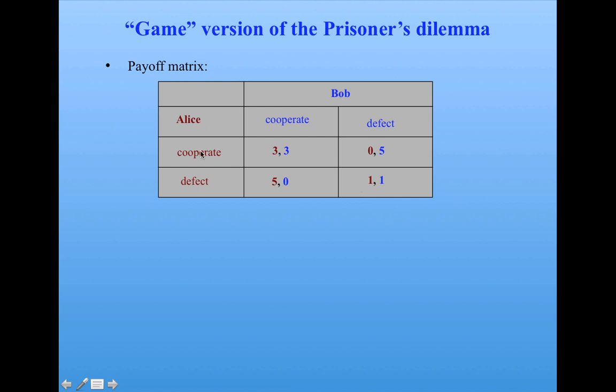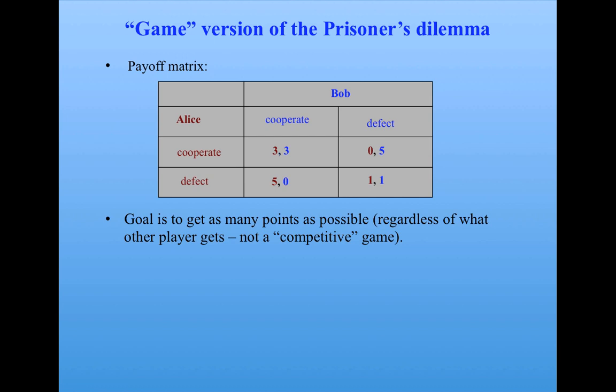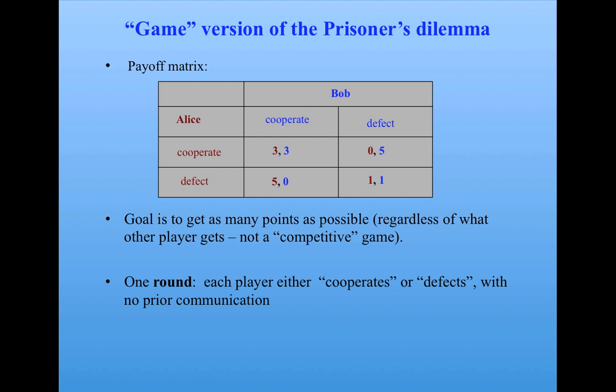Alice can reason that if Bob cooperates, the best thing for her is to defect, and if Bob defects, the best thing for her is still to defect. So in both cases, Alice will decide to defect. The goal is to get as many points as possible regardless of what the other player gets — this is not a competitive game, it's about individuals maximizing their own payoff. On one round, each player either cooperates or defects with no prior communication between the two players.